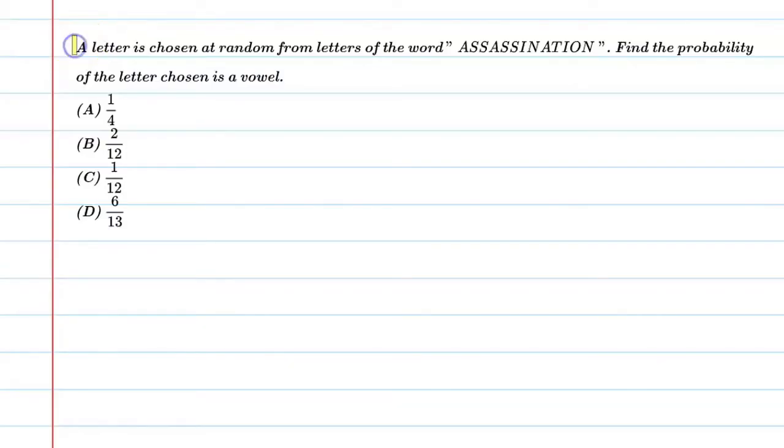Hello students, let's solve this question. A letter is chosen at random from the letters of the word assassination. Find the probability of the letter chosen is a vowel.